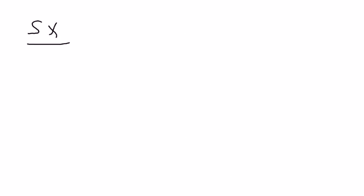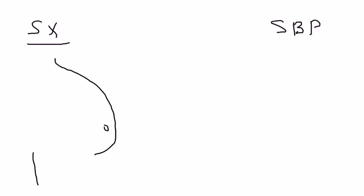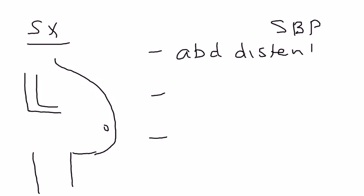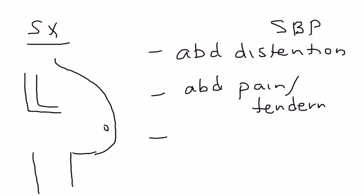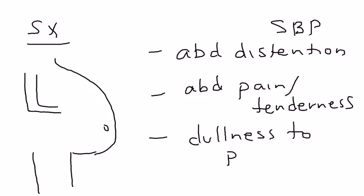The symptoms of SBP basically involve a lot of the same symptoms that you'd have with ascites. Ascites presents as a big swollen belly — almost looks like the person is pregnant. Some of the symptoms include abdominal distension and abdominal pain or tenderness.